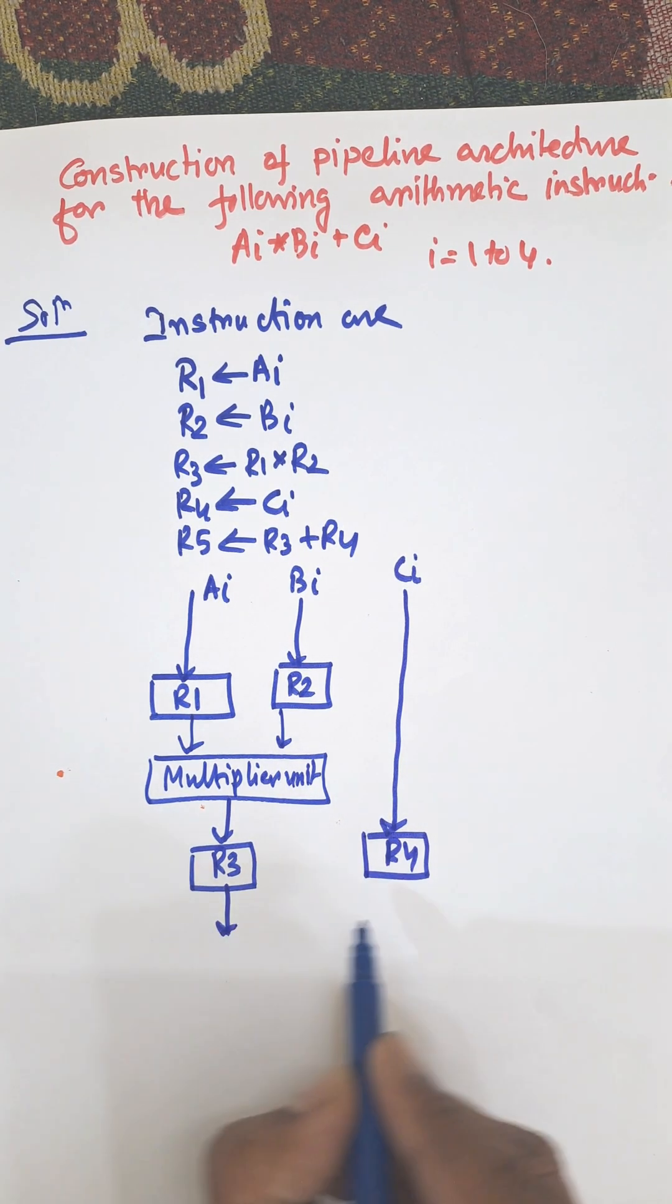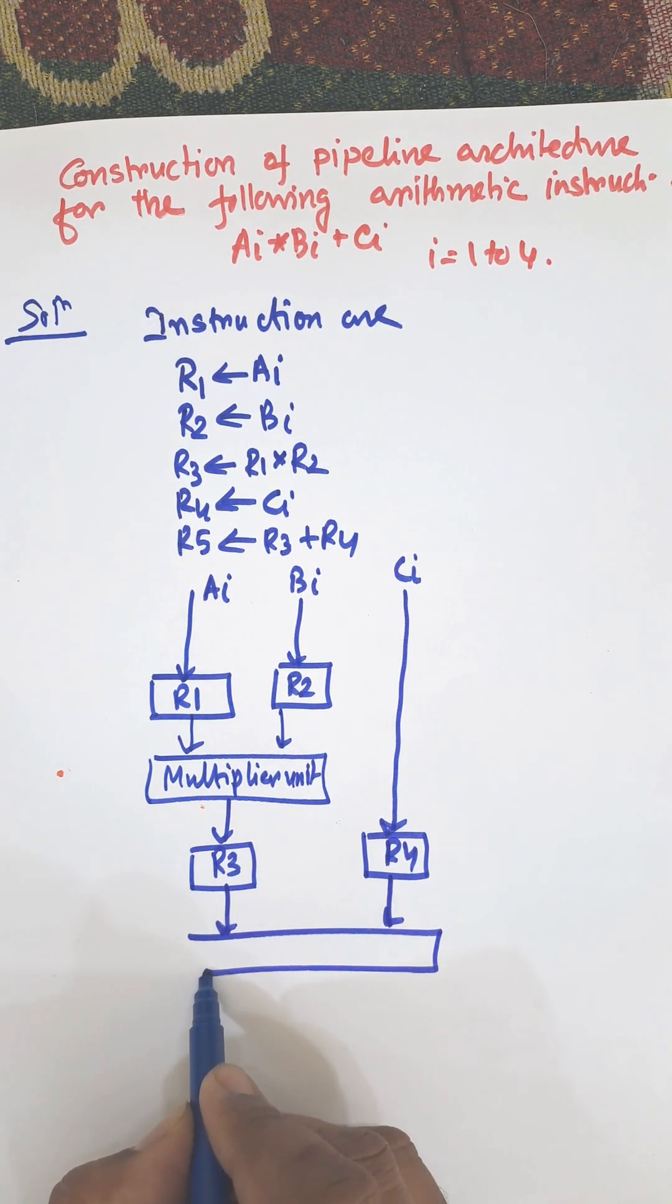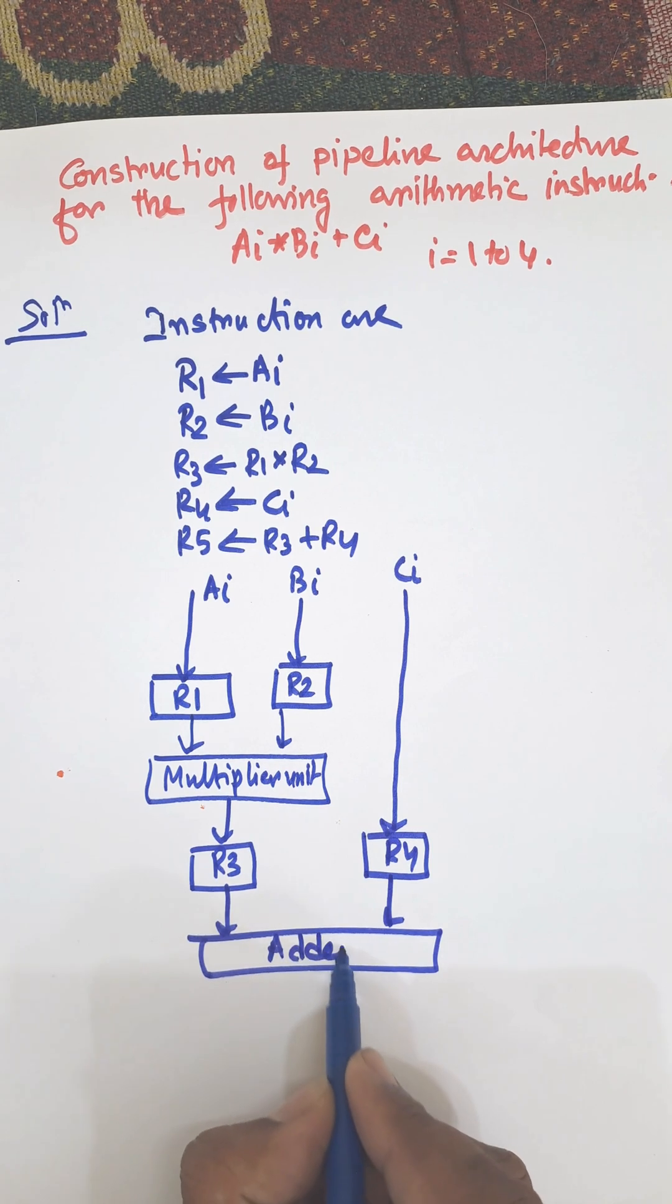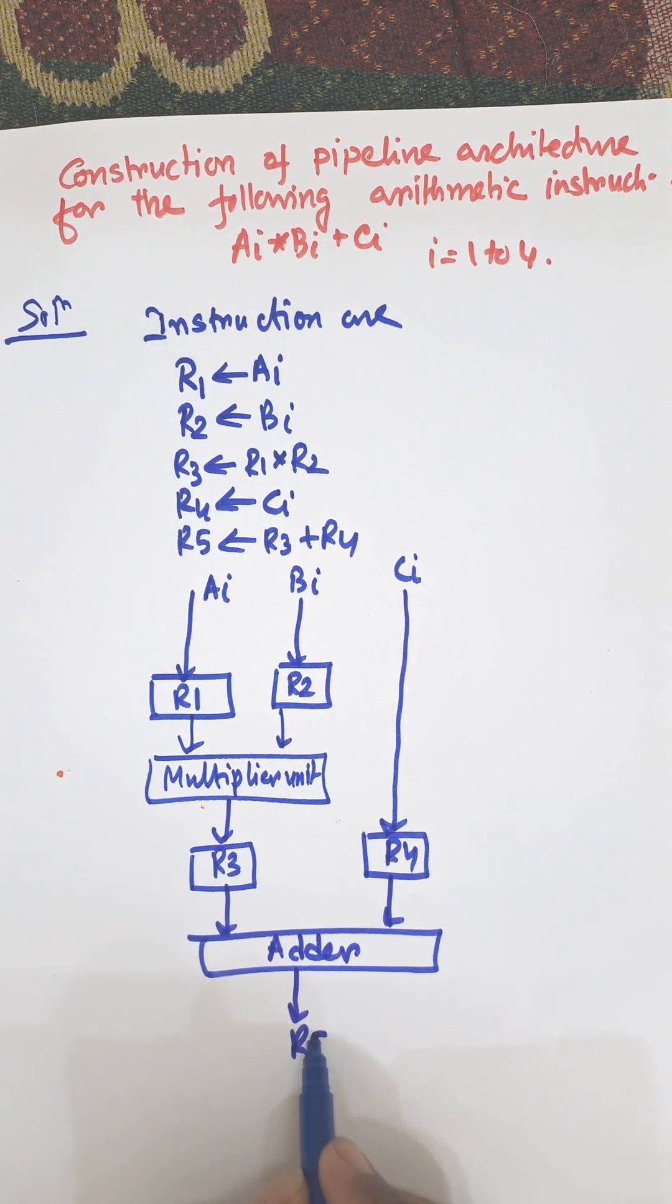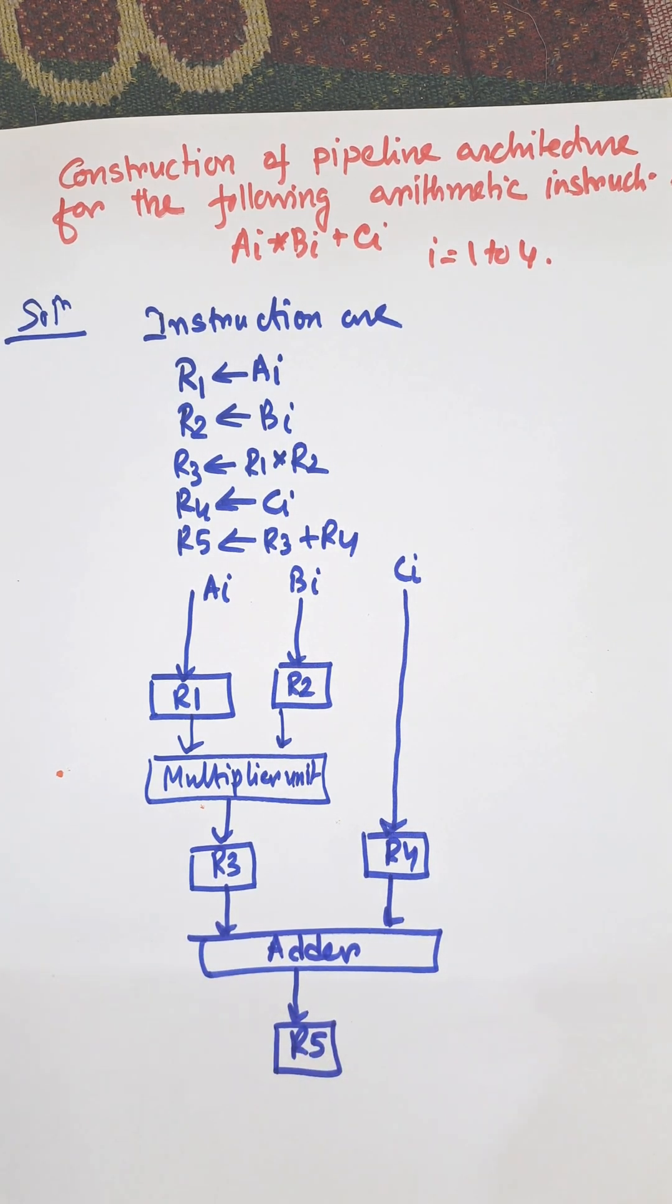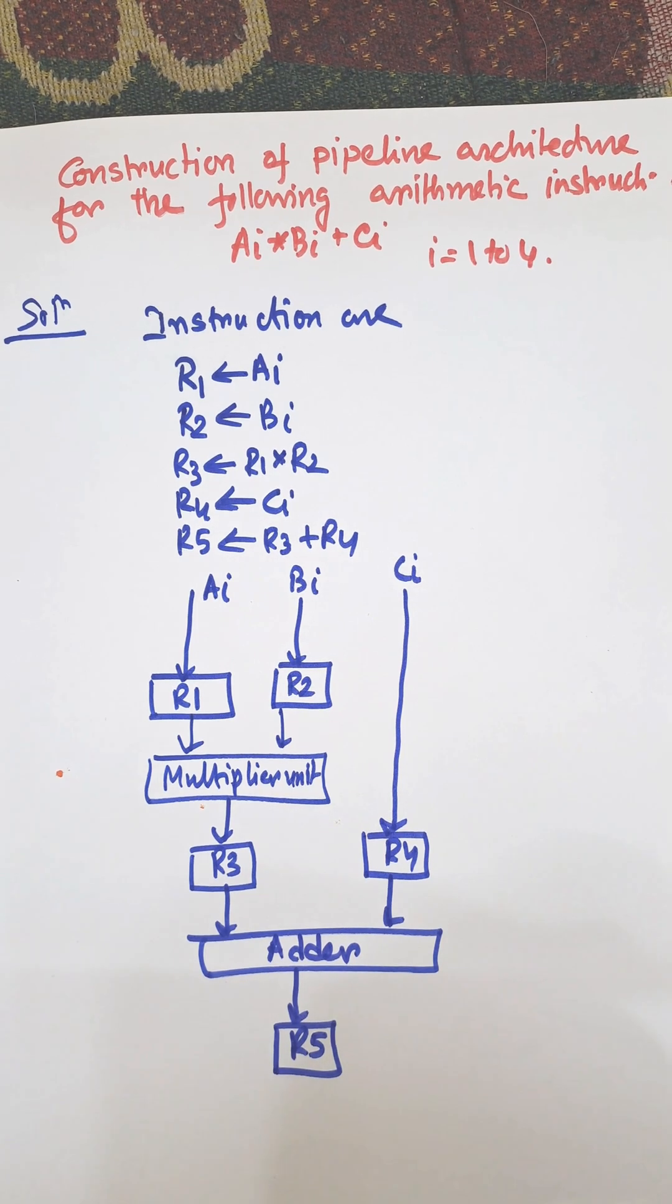Finally, r3 and r4 are added together and we will get the result in r5. So this is the pipeline architecture. We need to find the number of segments.